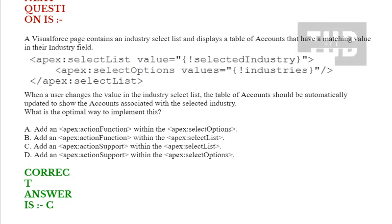Next question: a Visualforce page contains an industry select list and displays a table of accounts that have a matching value in their industry field. When a user changes the value in the industry select list, the table of accounts should be automatically updated to show the accounts associated with the selected industry. What is the optimal way to implement this?